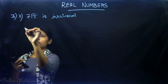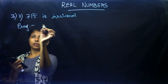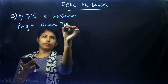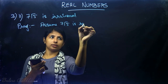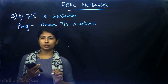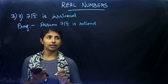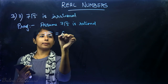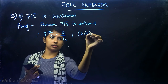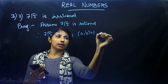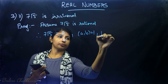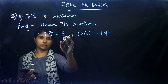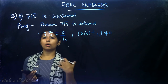We use proof by contradiction. Assume 7√5 is rational. Therefore 7√5 can be expressed in the form a/b where HCF(a,b) = 1 and b ≠ 0. It can be expressed in the form a/b with a and b co-prime.